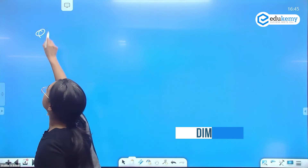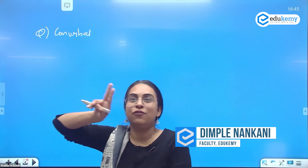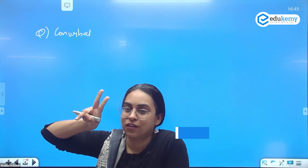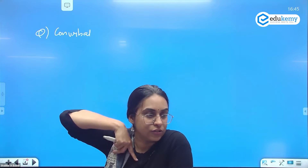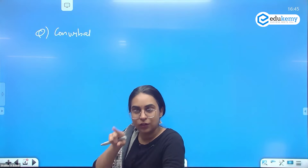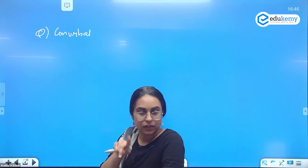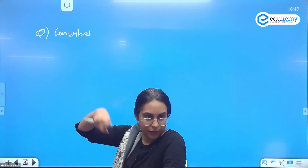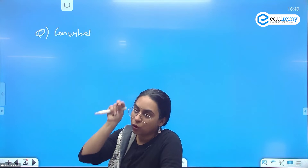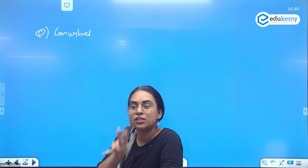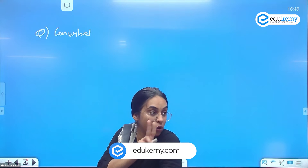The next question is on conurbation. Do we have conurbations in India? We have two potential conurbations: one is the Kolkata to Ugli belt, and the other is around the Ambala and Delhi region. In Kullar, you have diagrams for both. I would want both of these diagrams in your notes. If they ask you something about conurbation in India, try to draw that diagram in your answers.